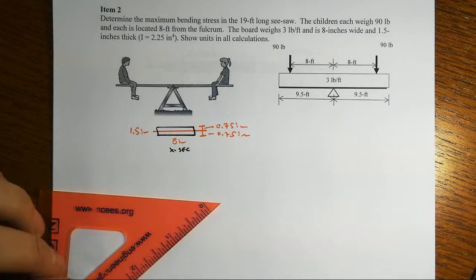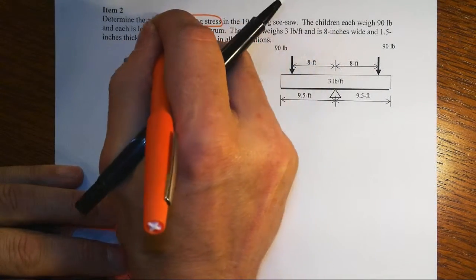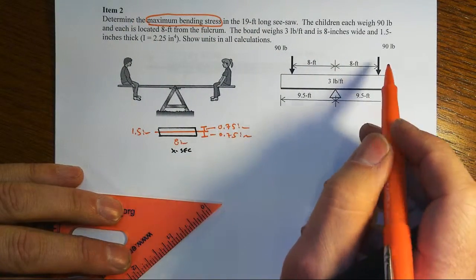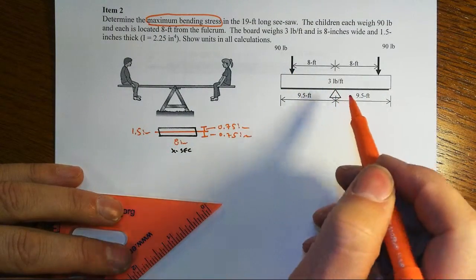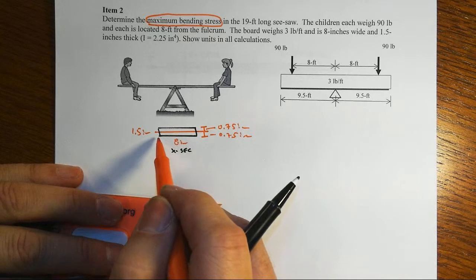In item 2, we're asked to find the maximum bending stress, that means maximum normal stress, for this teeter-totter. That's 19 feet long, we have two equally weighted children, but we also have the self-weight of this 8-inch wide by 1.5-inch thick beam.